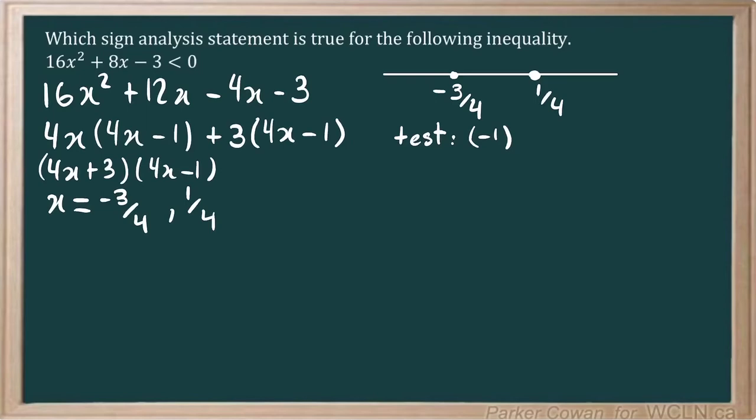And so we basically plug that in to our two factors here. So a test point of negative 1 at 4x plus 3, 4x minus 1. Well, that'll be negative 4 plus 3 and negative 4 minus 1. And so that's going to be a negative times a negative.